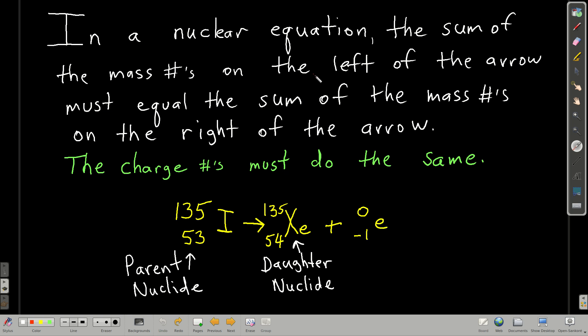So when we have a nuclear equation that describes nuclear decay or nuclear reactions, it looks something like this down here. Now, the thing about nuclear equations that's going to make them really easy for you is that when you add up all of the numbers in the top on the left of the arrow, they must equal all the numbers on the top to the right of the arrow. All the mass, the sum of the mass numbers on the left must equal the sum of the mass numbers on the right.